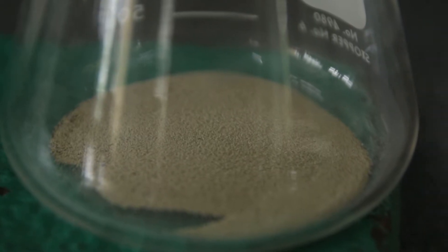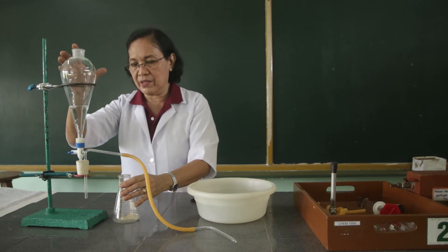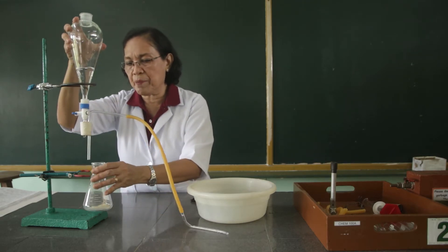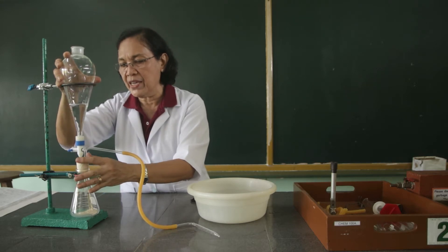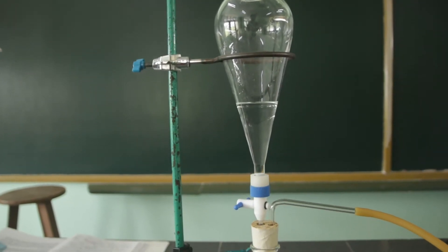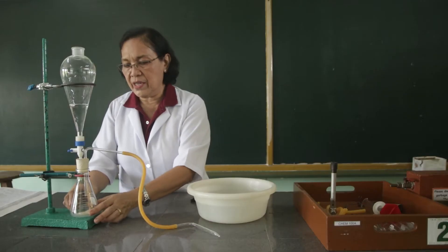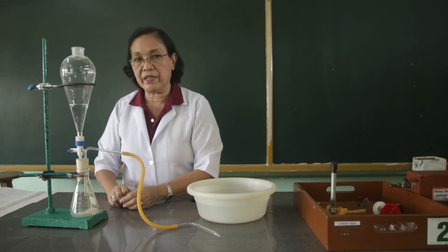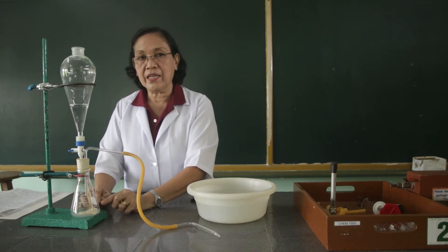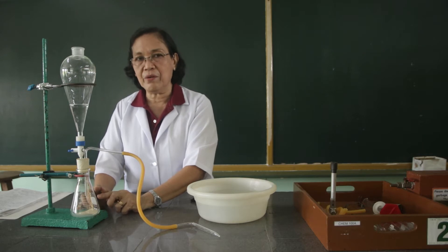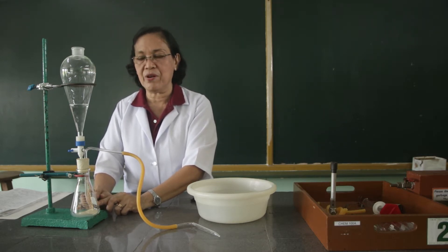And this will be reacted by the water inside the separatory funnel. I am going to insert this separatory funnel into the Erlenmeyer flask so that the water from the separatory funnel will drip down onto the calcium carbide inside the Erlenmeyer flask. The reaction involved is that the calcium carbide plus water will form the acetylene gas plus the calcium hydroxide.